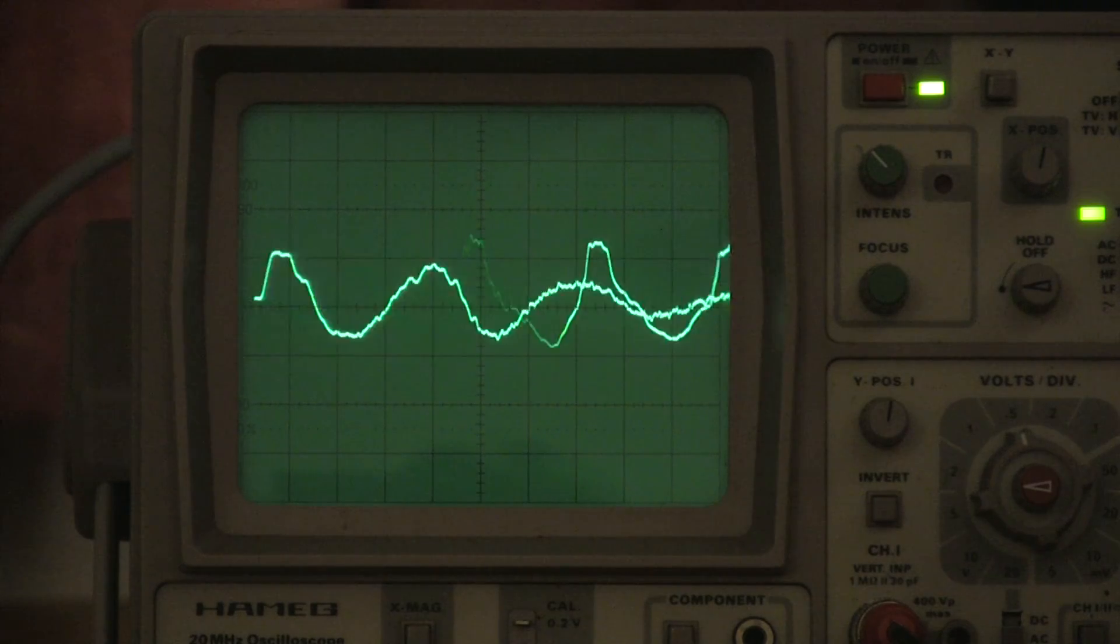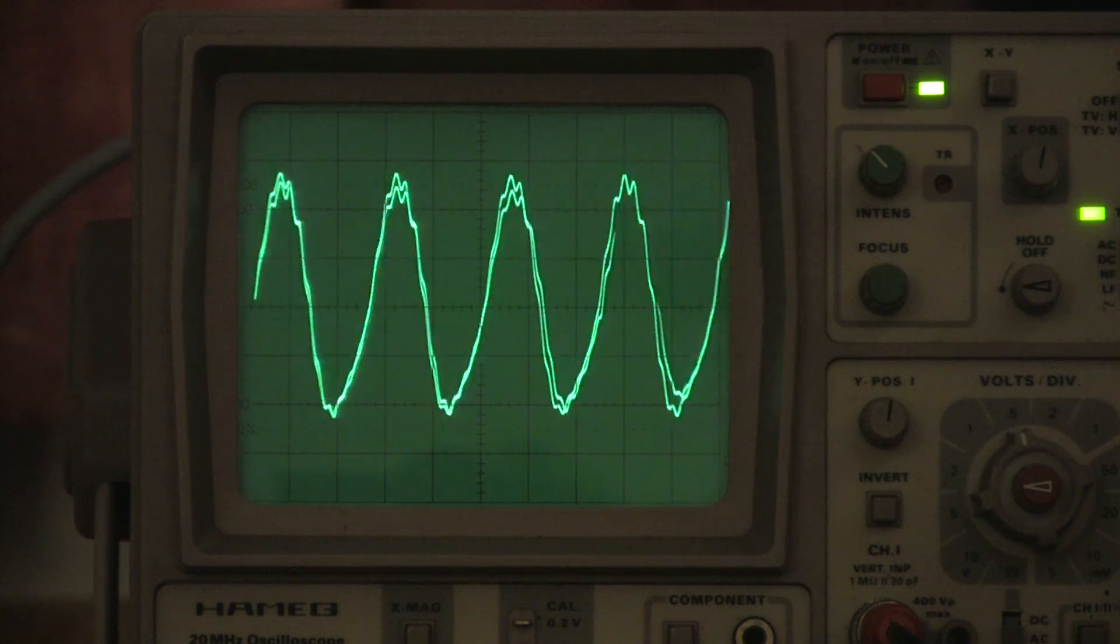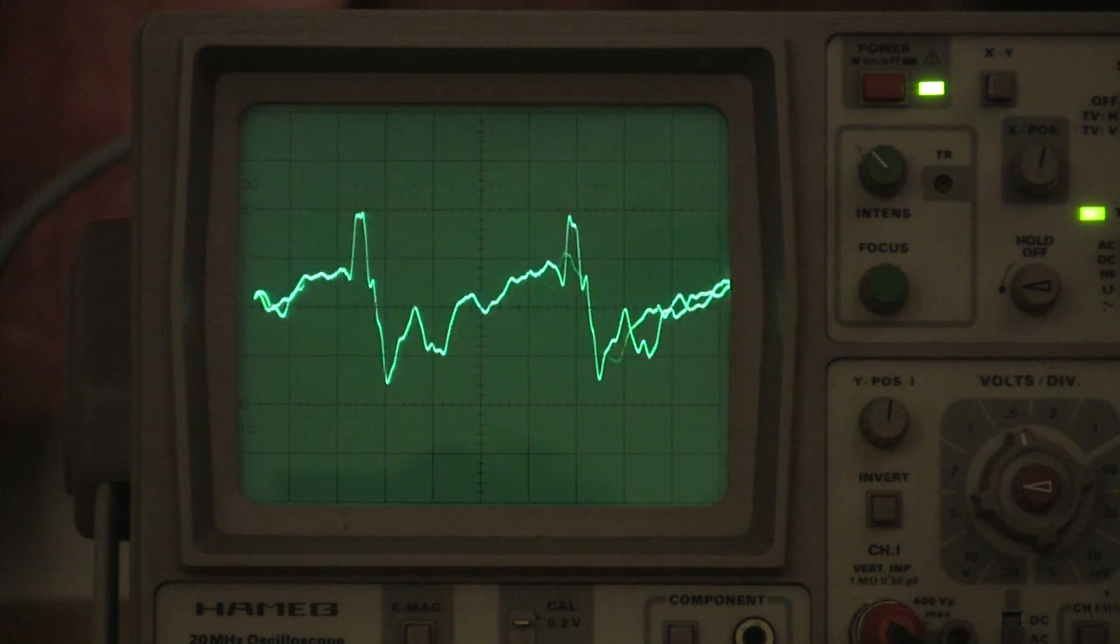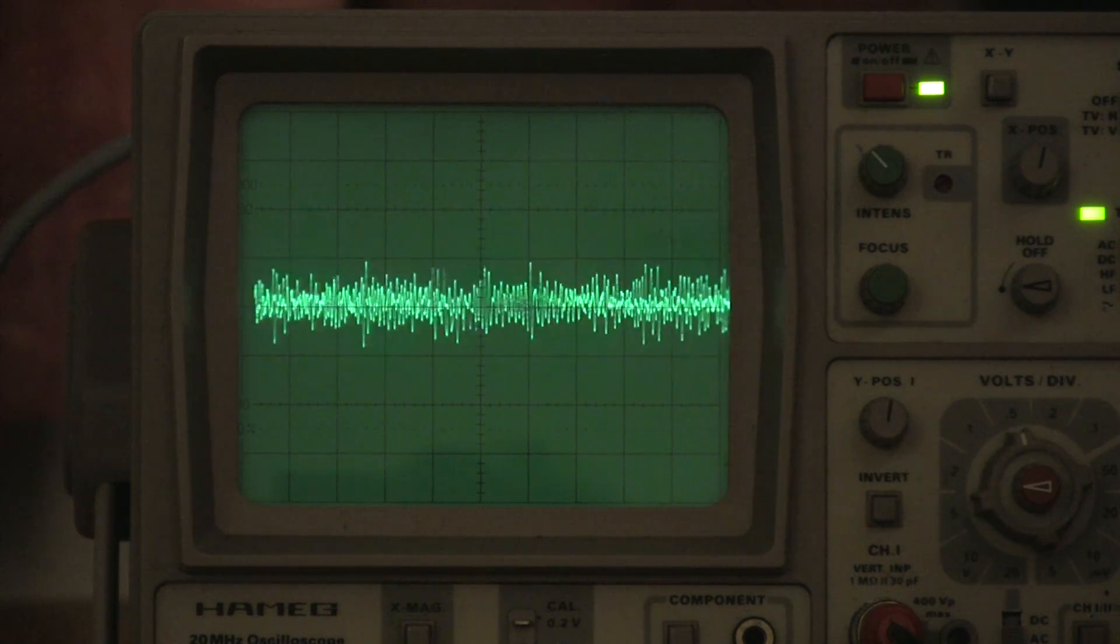Now I will increase the frequency to 1000 Hz or 1 kHz. As I continue to increase the frequency, I will adjust the time-based control of the oscilloscope so that you can see the shapes of the waveforms clearly.